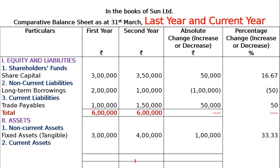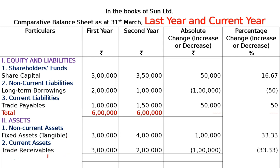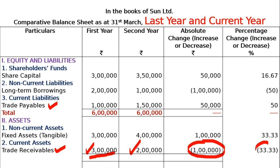Second is Current Assets. Under Current Assets comes Trade Receivables. Trade Receivables: first year value is Rs. 3 lakhs, second year it becomes Rs. 2 lakhs. So second year minus first year = minus Rs. 1 lakh. Percentage change = minus 1 lakh divided by 3 lakh into 100 = minus 33.33%. Both values come in minus — whenever the difference is in minus in amount, the percentage change will also be in minus.